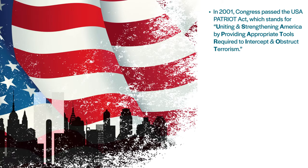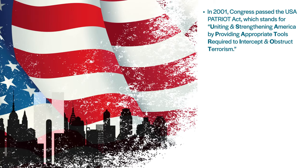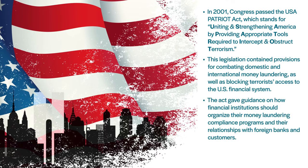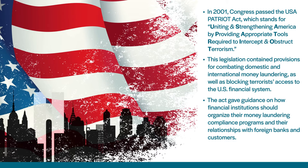Then in 2001, Congress passed the USA PATRIOT Act, which stands for Uniting and Strengthening America by Providing Appropriate Tools Required to Intercept and Obstruct Terrorism. This legislation contained provisions for combating domestic and international money laundering, as well as blocking terrorist access to the U.S. financial system. More specifically, it provided guidance on how financial institutions should organize their money laundering compliance programs and their relationship with foreign banks and customers.